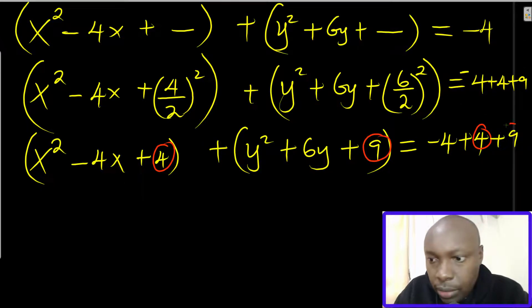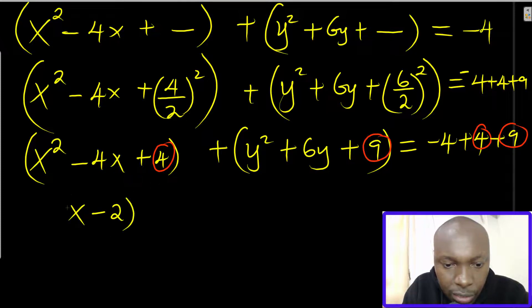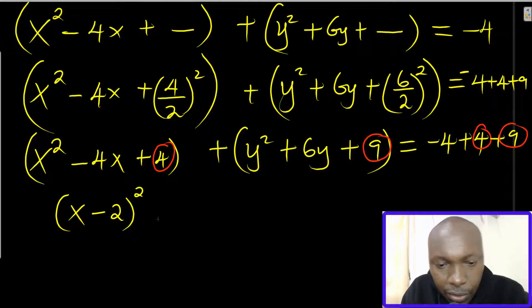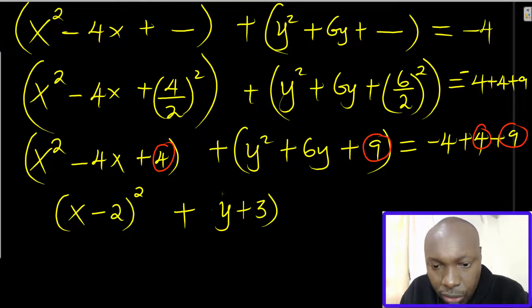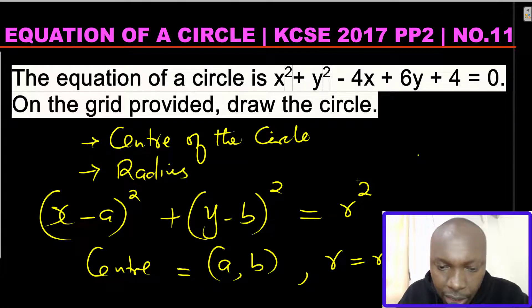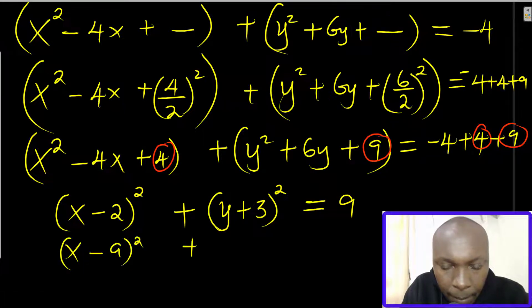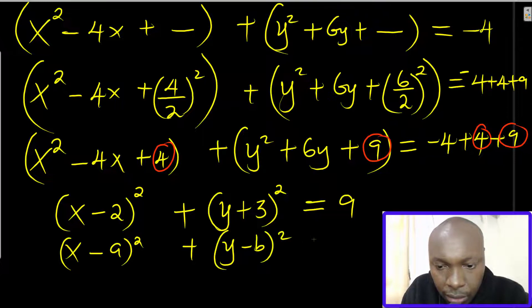Now factorize: x squared minus 4x plus 4 factorizes to x minus 2, all squared. Then y squared plus 6y plus 9 factorizes to y plus 3, all squared. The right-hand side: negative 4 plus 4 plus 9 equals 9. So we get x minus 2 squared plus y plus 3 squared equals 9. This is now in the standard form of a circle equation.